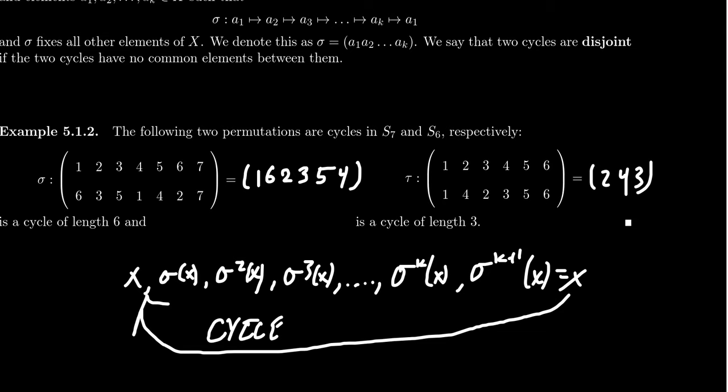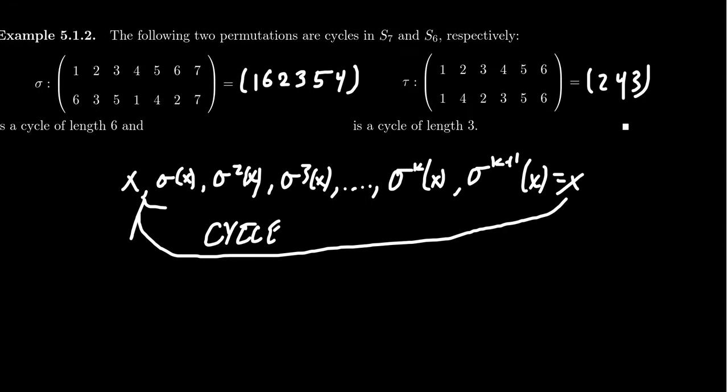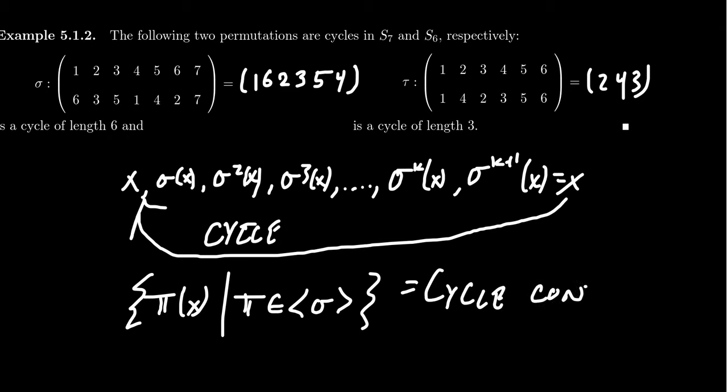And so this starting and ending with X is indicative that you have some cycle going on right here. And that's exactly how we were able to do this. So from this, we can construct a cycle starting at X, and we go until we basically get X again. Of course, the cycle starting at X is none other than the set of all images of X under various permutations pi, where pi just belongs to the cyclic subgroup generated by sigma.